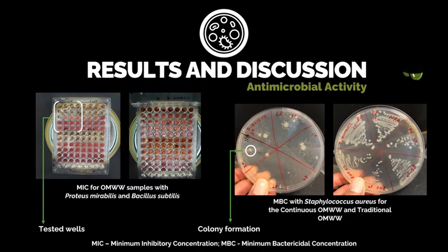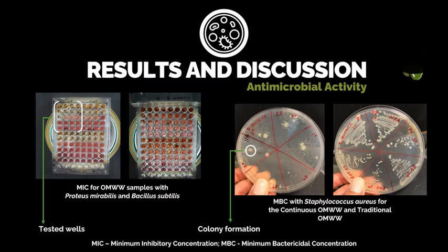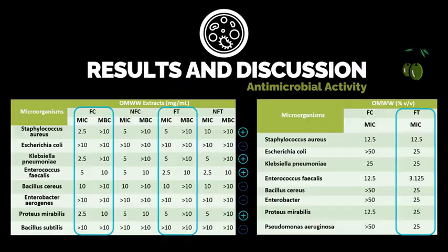The antimicrobial activity analysis was performed with the lyophilized samples and also directly with the wastewaters. For the lyophilized olive mill wastewaters, the obtained powder was dissolved in Mueller-Hinton broth to obtain a solution of known concentration that was then serially diluted. The figures on the left show an example of microplate results obtained after incubation, and wells with no growth were plated to agar plates to determine the MBC and estimate the bactericidal capacity, as shown in the right photos. In general, better results were obtained when testing the olive mill wastewater directly compared with the lyophilized samples, particularly for the filtered samples obtained by the traditional method, which showed inhibitory activity against all eight tested microorganisms.